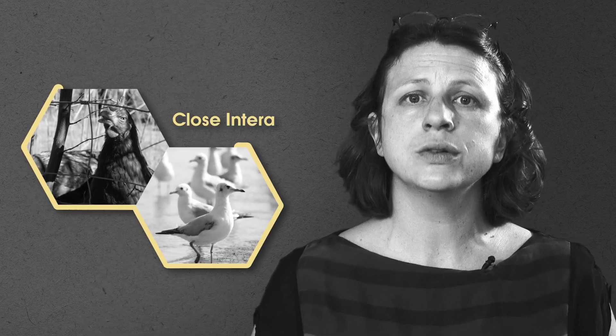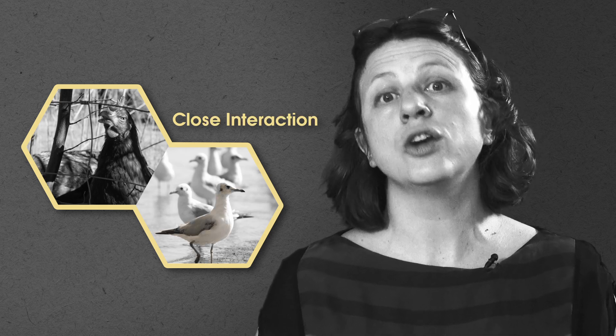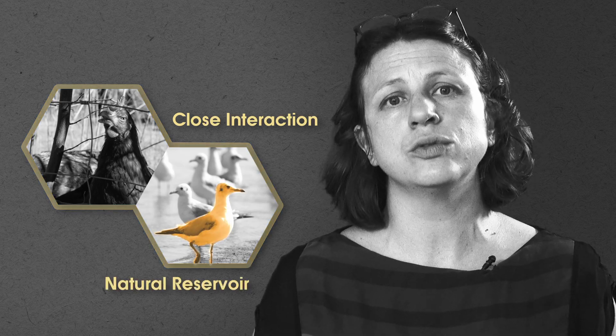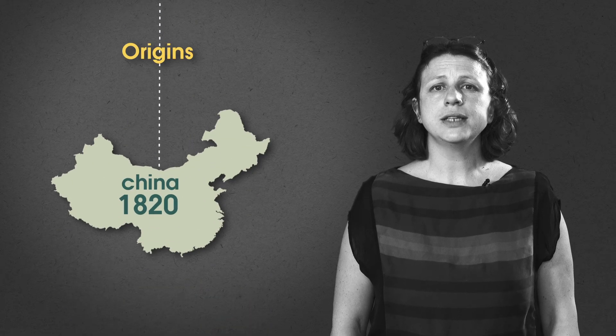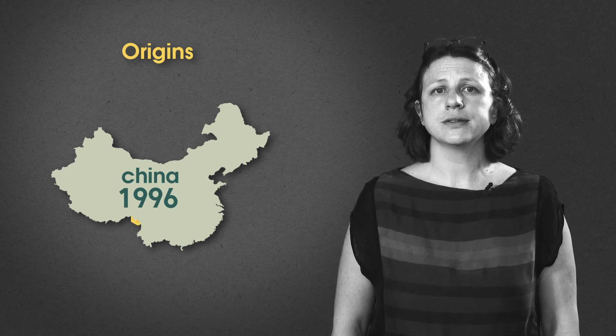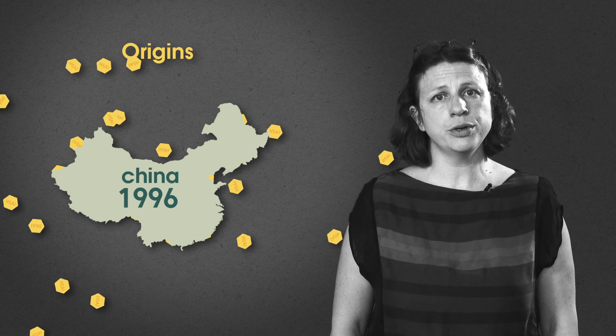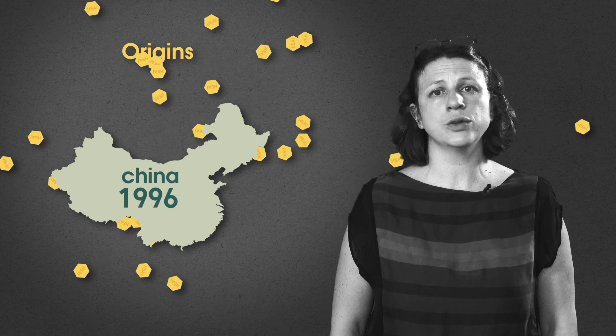Avian influenza originates in regions where poultry farms interact closely with wild bird habitats, especially aquatic birds, which are the natural reservoirs of this virus. The highly pathogenic H5 strain was first detected in a poultry farm in China in 1996. Since then, it has spread to wild birds, giving rise to new variants found worldwide.